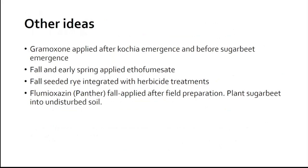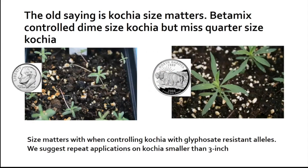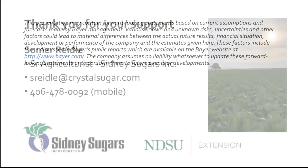A few other ideas for 2023 include Gramoxone applied after kochia emergence and before sugar beet emergence, fall and early spring applied ethofumesate, cover crops such as fall-seeded rye integrated with herbicide treatments, and fall-applied Panther after field prep is complete where you would plant sugar beets in the spring into undisturbed soil. Some of these are already being researched at Nesson Valley. One grower is practicing fall-applied Panther in a no-till situation, but it needs more data before we could recommend it with confidence. Beta mix taught us that size matters, and the same is true for glyphosate-resistant kochia — the difference between dime-sized and quarter-sized kochia makes a large difference in control.